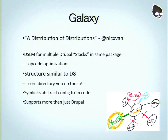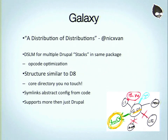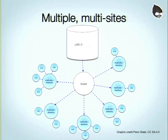I call it Galaxy — it's a distribution for distributions. ELMS Learning Network is one downloadable package you can spin up with Vagrant. It takes an approach similar to Drupal 8 where there's a core directory you don't touch and a config directory. Using DSLM and some extra Symlink stuff, we completely abstract configuration from code — settings.php, sites.php, the files directory all live in the config directory and are referenced from there.